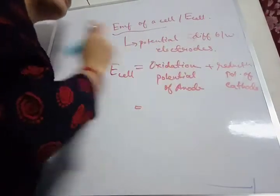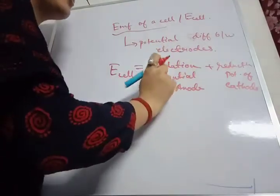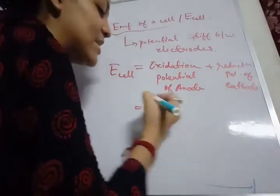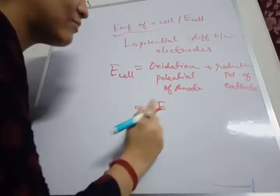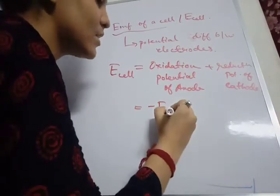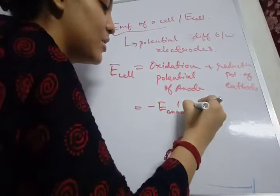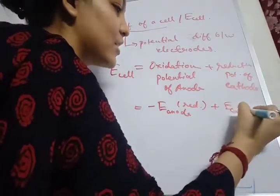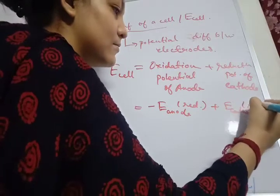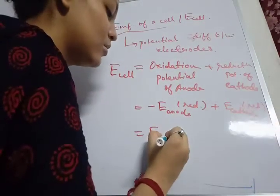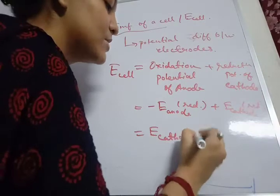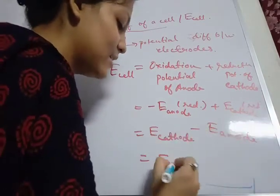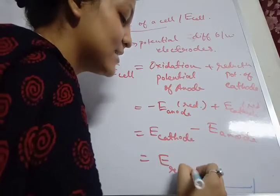As per modern convention, oxidation potentials are represented in terms of reduction potentials. So by changing the sign, E cell equals negative E anode (reduction potential) plus E cathode (reduction potential). Therefore, E cell equals E cathode minus E anode, since the potential of cathode will always be more than the potential of anode. Or we can write E right electrode minus E left electrode.